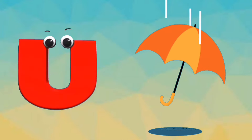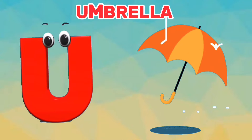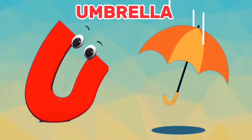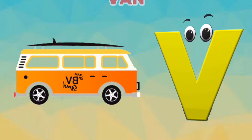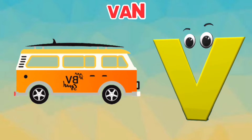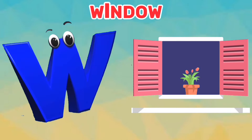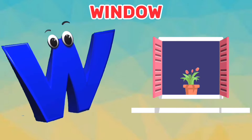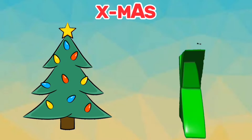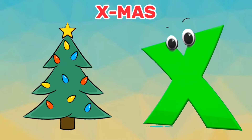U is for umbrella. U, u, umbrella. V is for van. V, v, van. W is for window. W, w, window. X is for Xmas. X, x, Xmas.